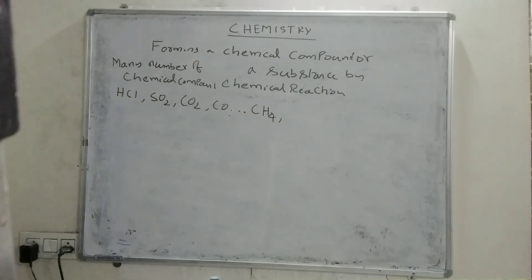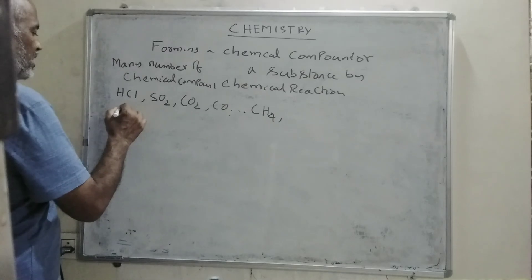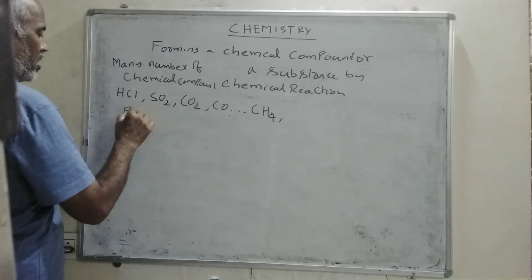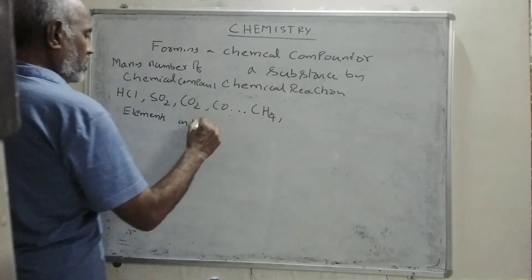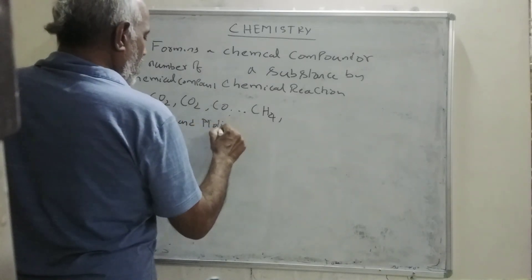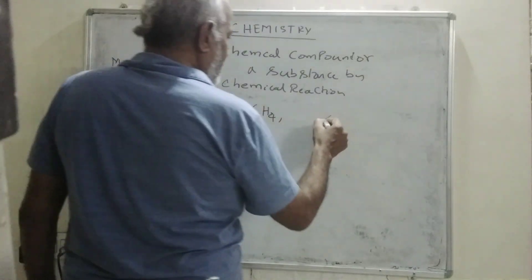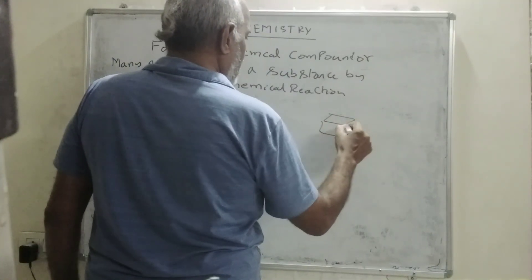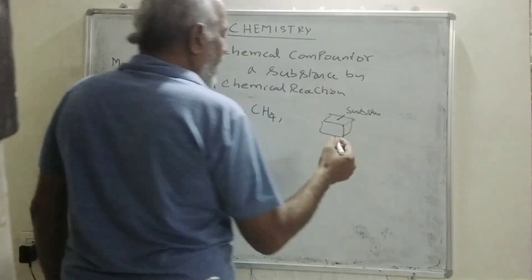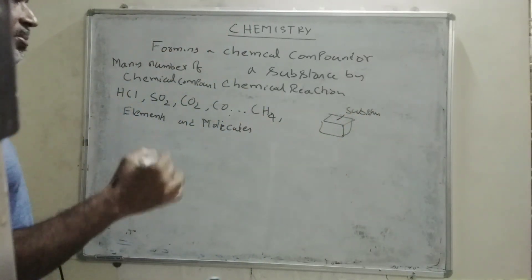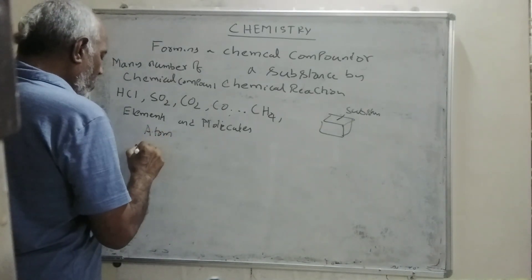First of all, chemistry is based upon elements and molecules. Any substance - the minimum particles of the substance could be an atom or a molecule.